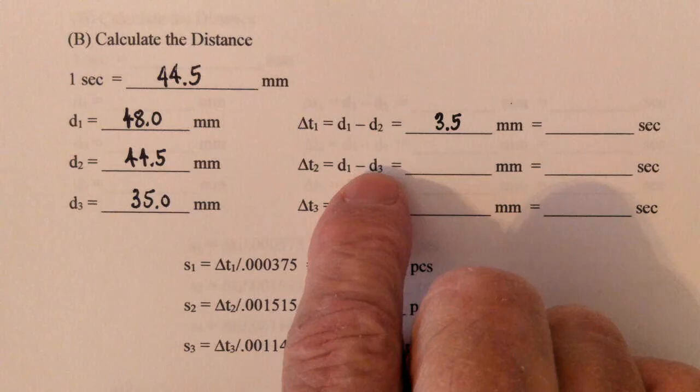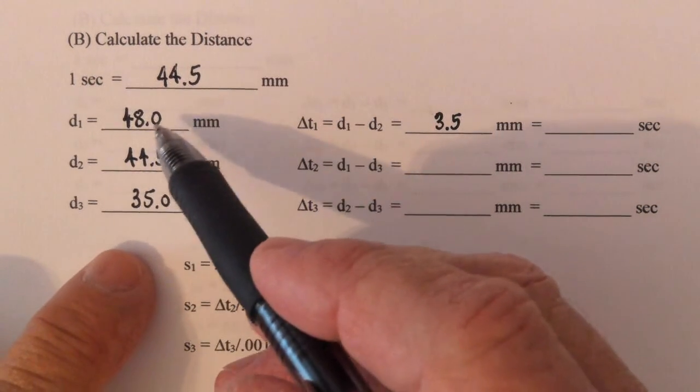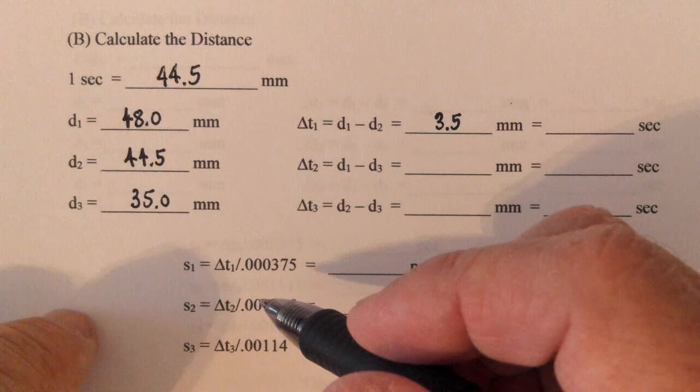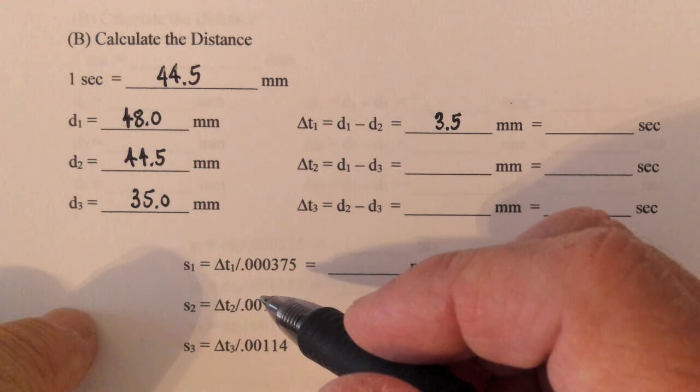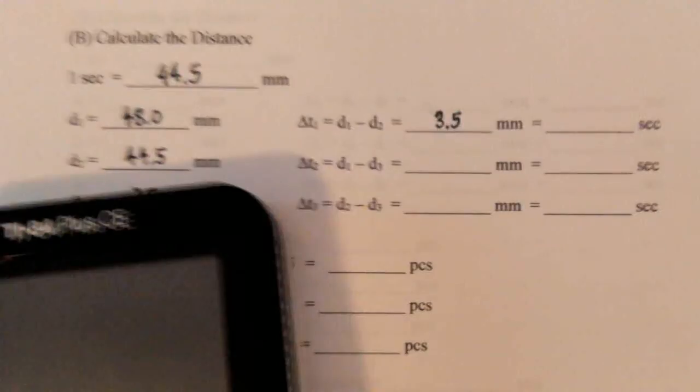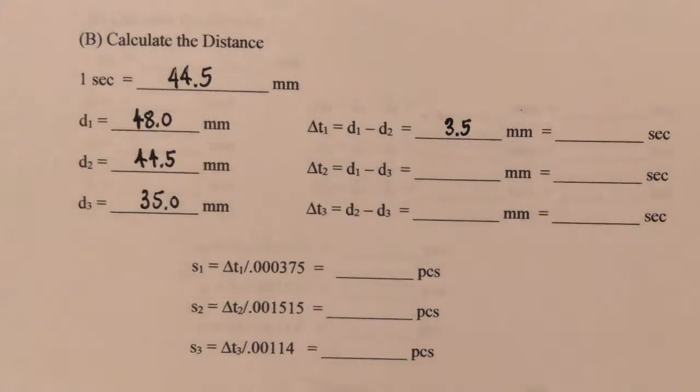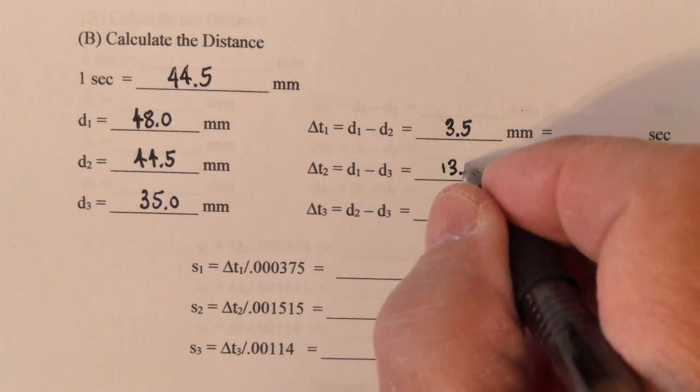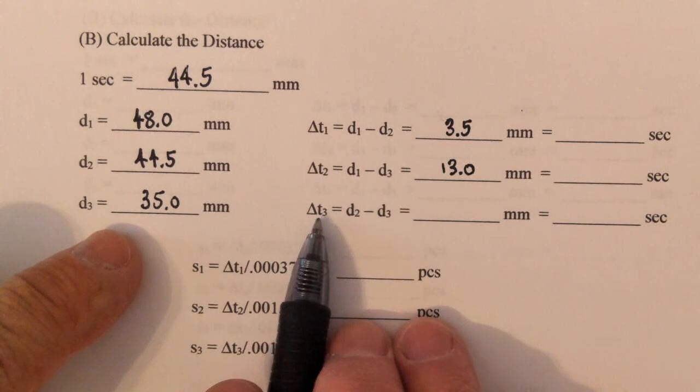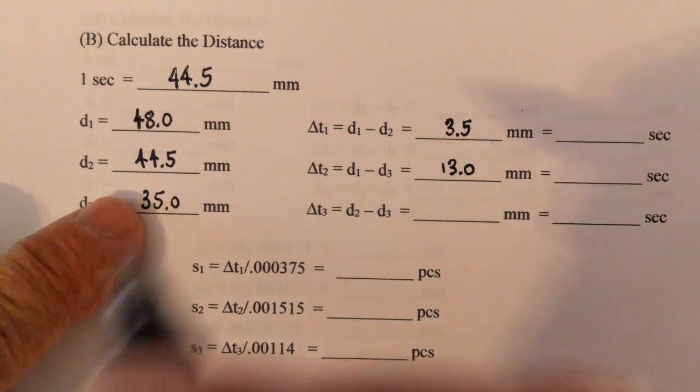Delta T2, it says T1 minus D3. It's the difference between when the first car arrived and the third car arrived. 48 minus 35 is 13. And then it tells you to take, for the change in time, this is the difference between the second car and the third car. 44.5 minus 35, and that is 9.5.